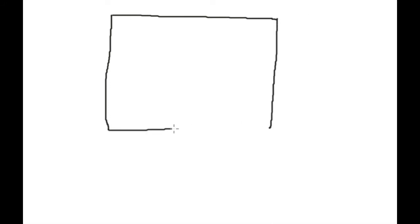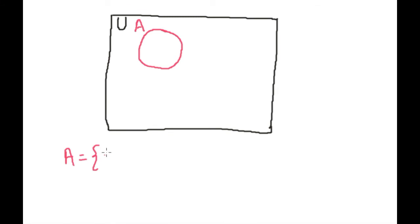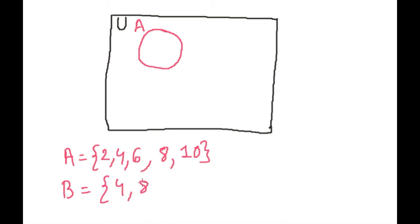Let's draw the Venn diagram. This is our set A, so set A = {2,4,6,8,10}. Set B = {4,8,12,16}. We can see that 4 and 8 are common between A and B, so we will write the common elements together in the overlapping region: 4 and 8 go in the intersection, while 2, 6, and 10 remain only in A.